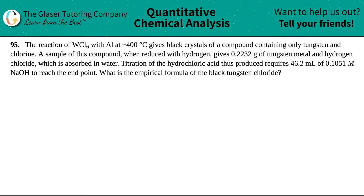Number 95. The reaction of WCl6 with aluminum at roughly 400 degrees Celsius gives black crystals of a compound containing only tungsten and chlorine. A sample of this compound when reduced with hydrogen gives 0.2232 grams of the tungsten metal and hydrogen chloride which is absorbed in water. Titration of the hydrochloric acid produced requires 46.2 mL of a 0.1051 molar NaOH to reach the endpoint. What is the empirical formula of the black tungsten chloride?